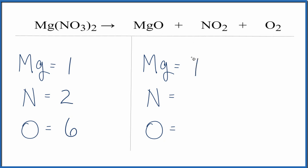On the product side we have one magnesium, one nitrogen, and then oxygens: one plus two is three, plus two more gives five oxygens. Normally I like to leave the oxygens till last, but we have them all kind of spread out here.